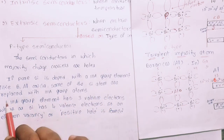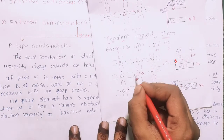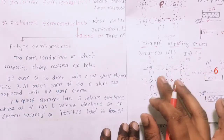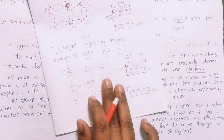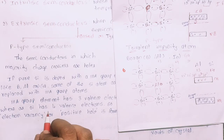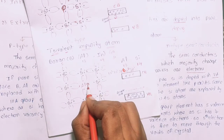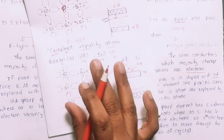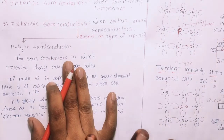In P-type semiconductors, silicon atoms are replaced with third group atoms like aluminum. Third group elements have three valence electrons, whereas silicon has four valence electrons. This creates an electron vacancy — a positive hole — in the crystal structure. The trivalent impurity atom creates a P-type semiconductor.